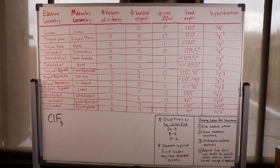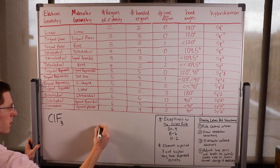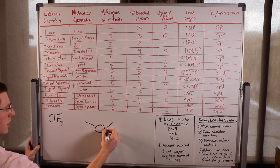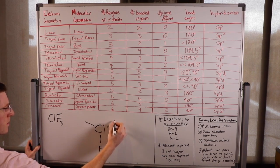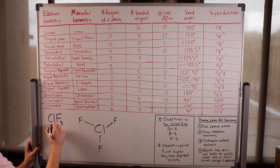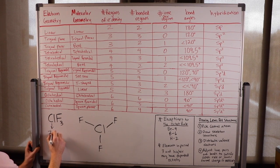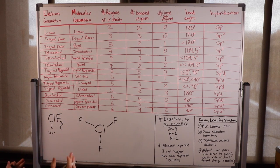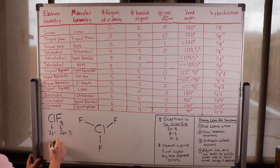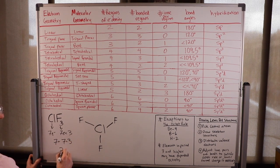Now I want to draw ClF3. The central atom is chlorine — there's only one. I'll attach my fluorines. Chlorine is in group 7A, so it contributes seven electrons. Fluorine is also in group 7A contributing seven electrons, and there are three of them. So seven plus 21 gives 28 electrons to work with total.